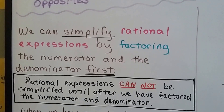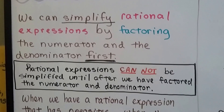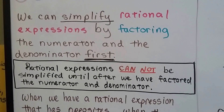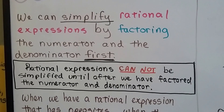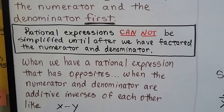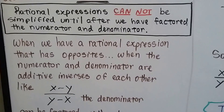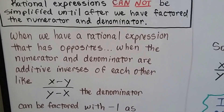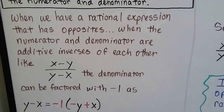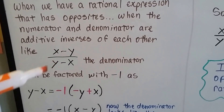We can simplify rational expressions by factoring the numerator and denominator first. Rational expressions cannot be simplified until after we've factored the numerator and denominator. When we have a rational expression that is opposites — when the numerator and denominator are additive inverses of each other, like x minus y over y minus x — the denominator can be factored with a negative 1. Here's our denominator: y minus x.